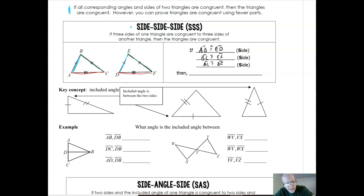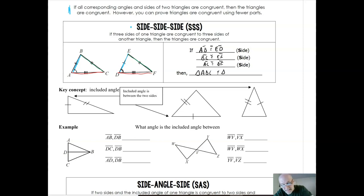Our conclusion would be that triangle ABC is congruent to another triangle, but we still have to be careful to match up which angle goes with what. Angle A is between the one tick mark and the three, so it corresponds to the vertex between one and three on the other triangle. So A goes with D, B goes with E, and C corresponds with F. That's Side-Side-Side.